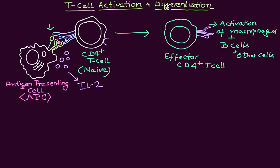IL-2 plays an important role in the differentiation of T cells. IL-2 will be produced by antigen-presenting cells, which are going to help naive T cells differentiate into effector T cells as well as memory T cells. I have written CD4E, which means CD4 effector T cell, and CD4-positive N, which means CD4-positive naive T cell.